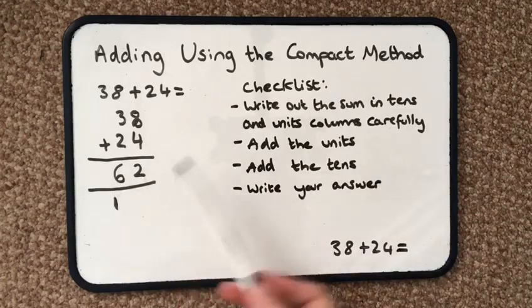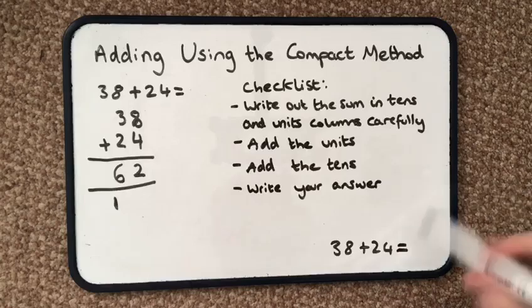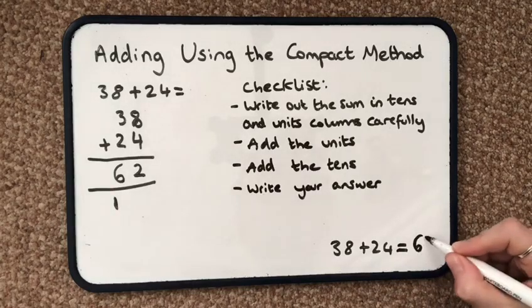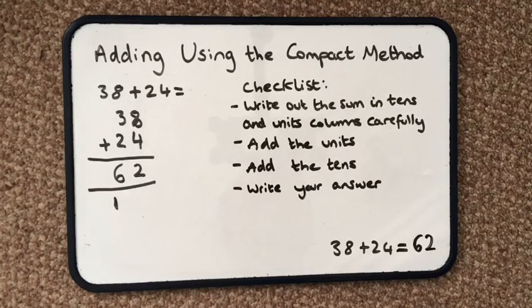Then I just write my answer. I've got 62 here. So 38 plus 24 equals 62. That is how you use the compact method for adding.